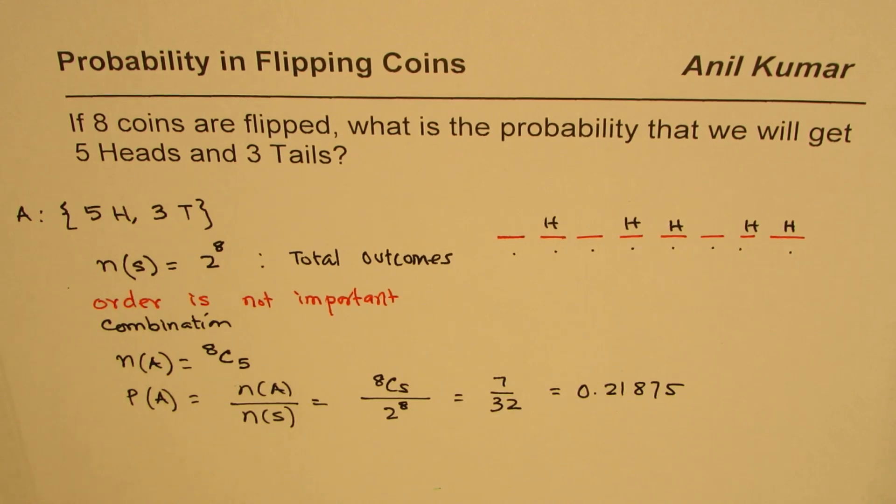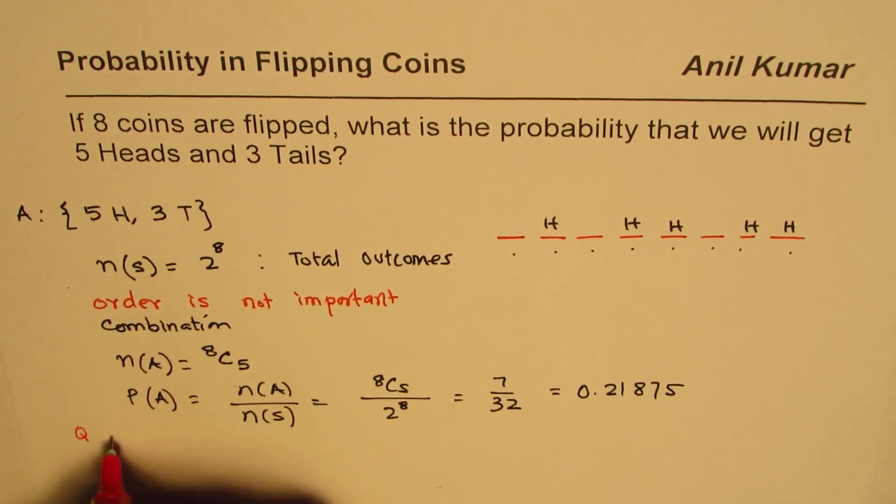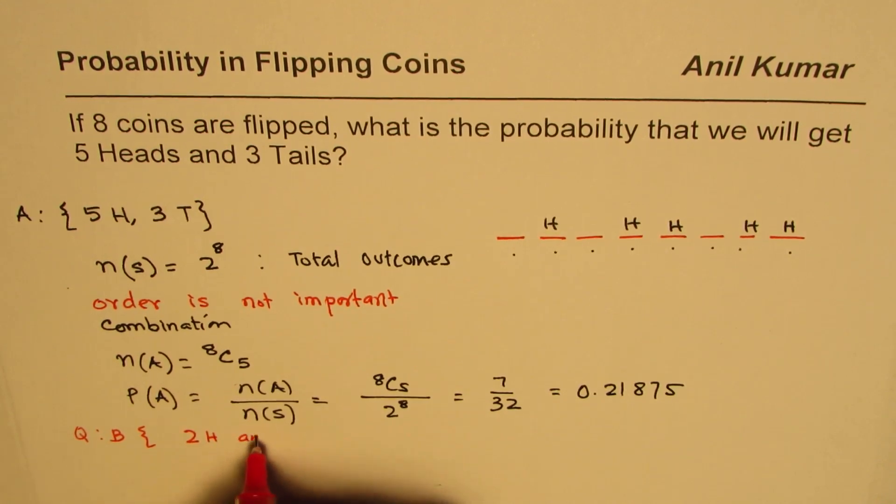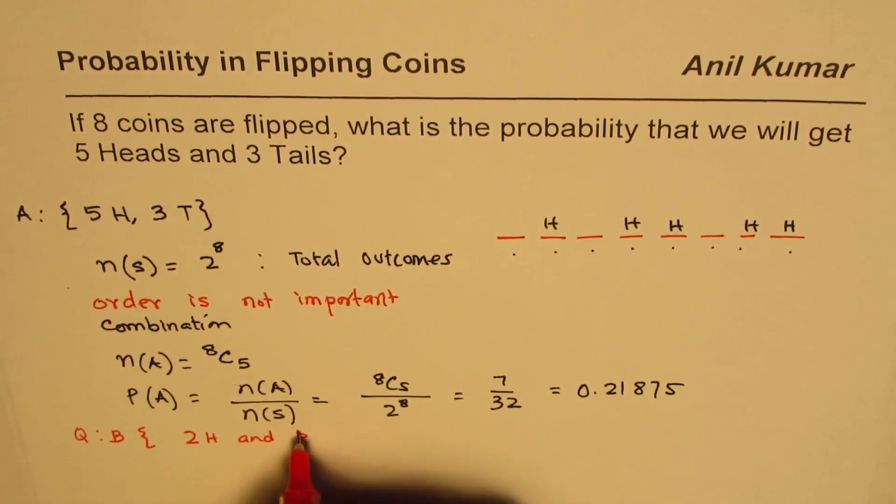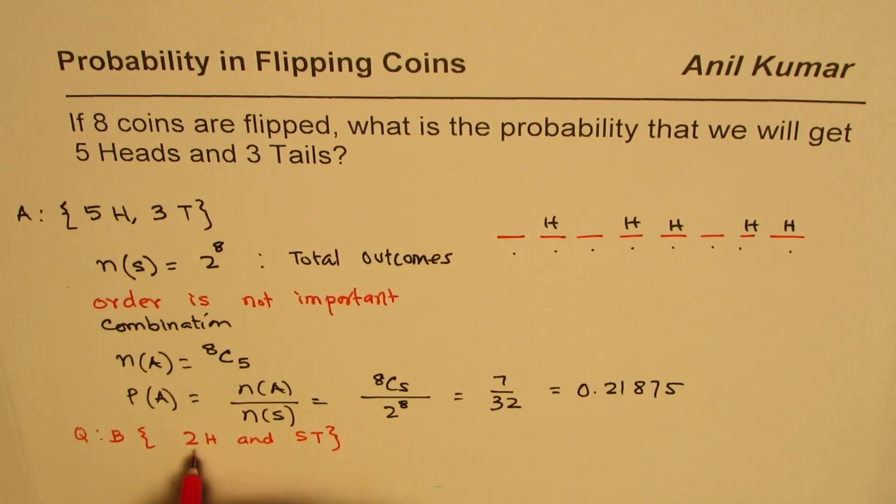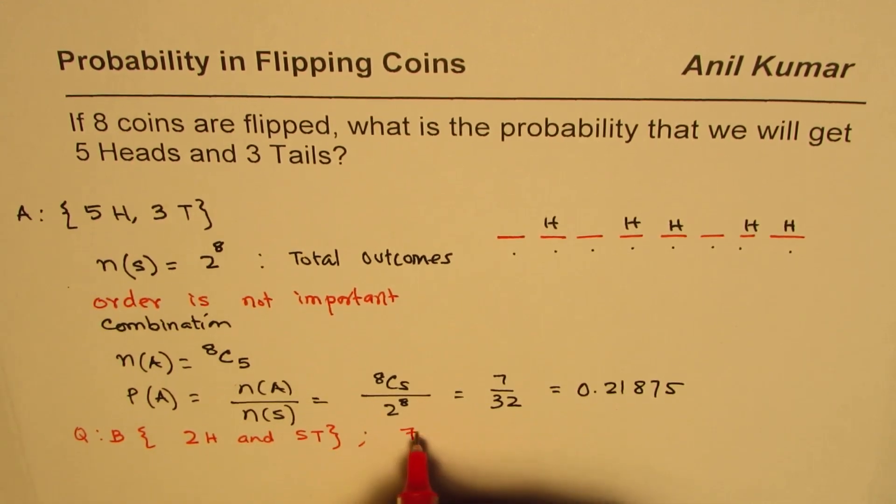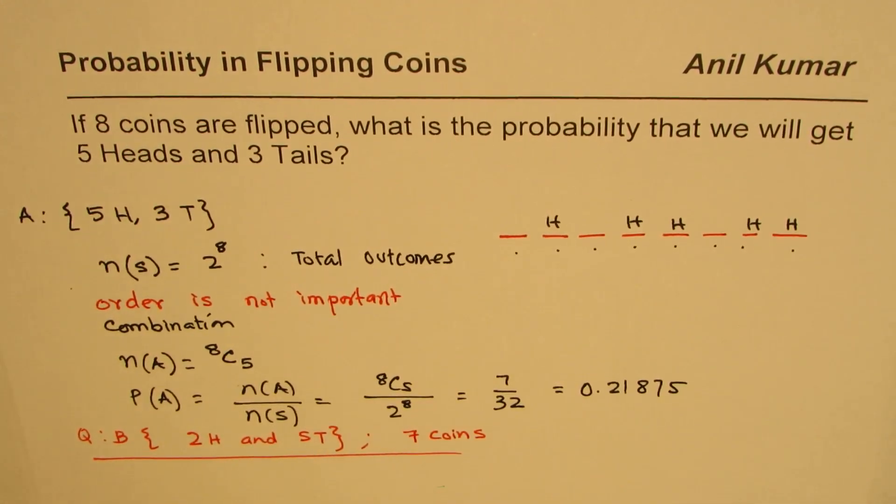So now you can practice. Let's say the question could be, what is the probability of an event to get, let's say, 2 heads and 5 tails. So that means we are flipping 7 coins. You need to find the probability of getting 2 heads and 5 tails. You can follow this principle and then do the needful. Thank you and all the best.